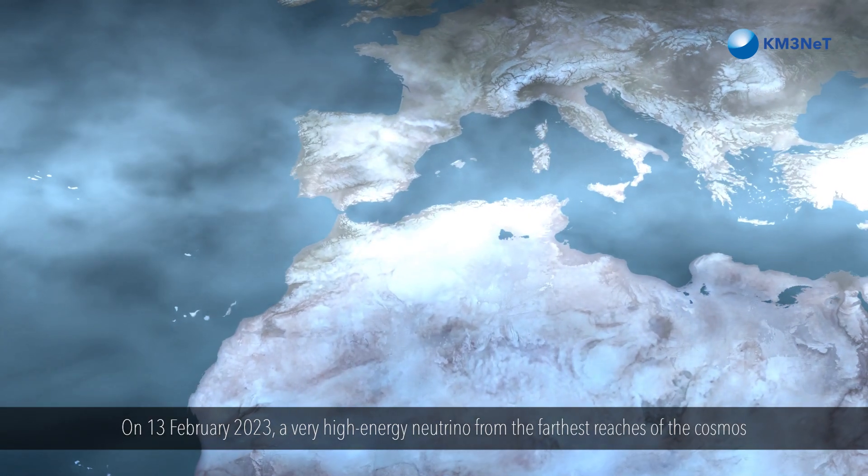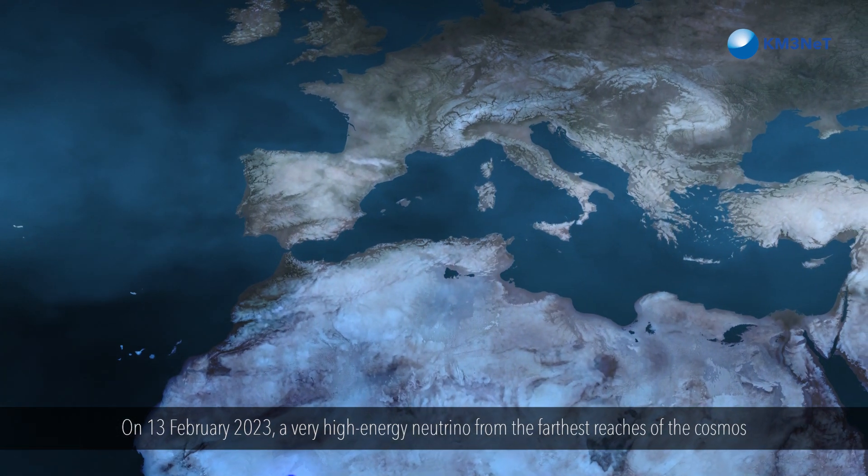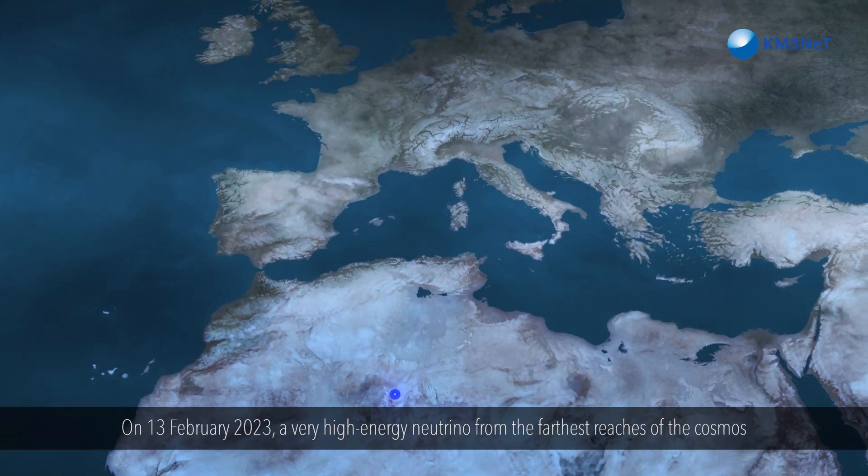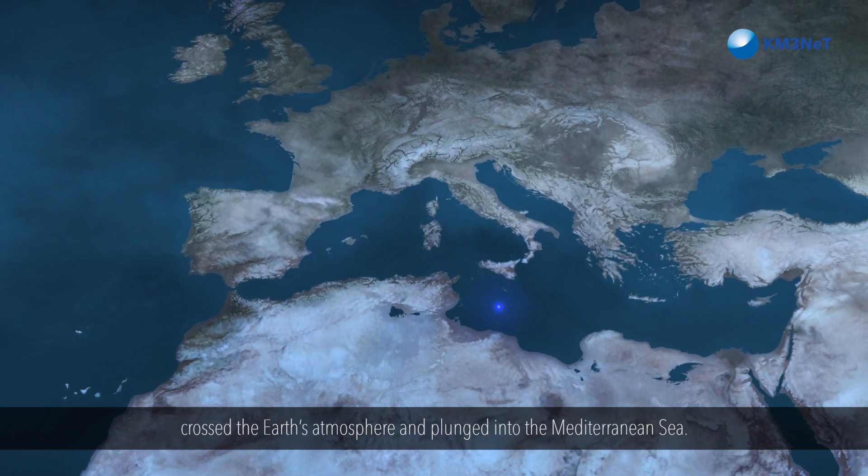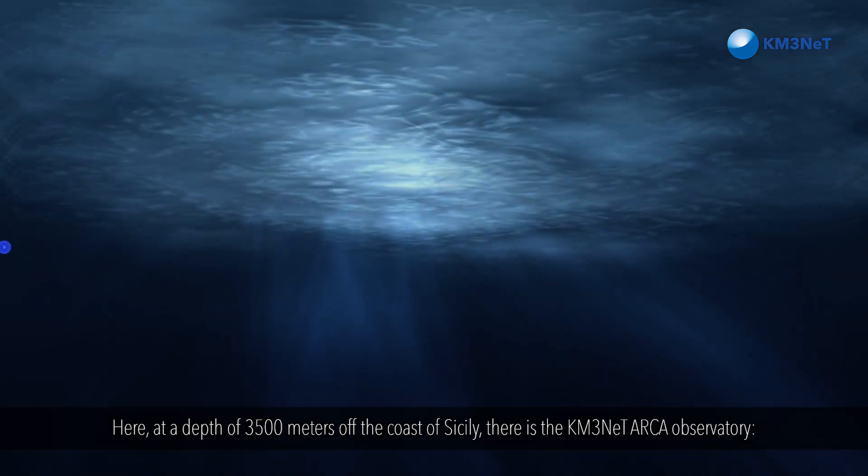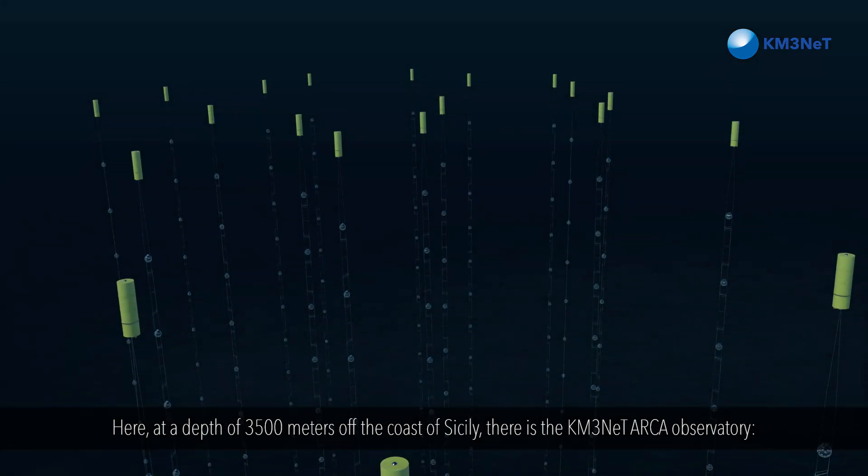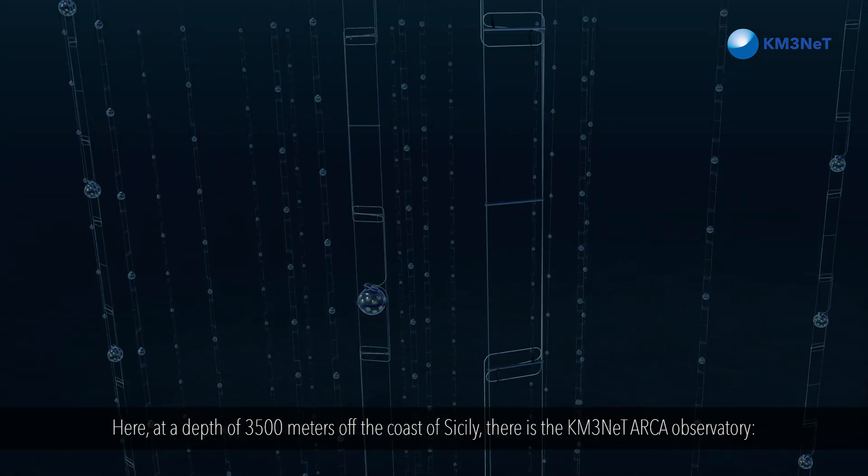On the 13th of February 2023, a very high-energy neutrino, from the farthest reaches of the cosmos, crossed the Earth's atmosphere and plunged into the Mediterranean Sea. Here, at a depth of 3,500 meters off the coast of Sicily, there is the KM3Net Arca Observatory, a gigantic network of high-tech eyes.